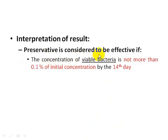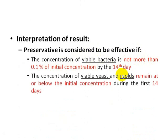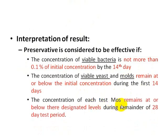A preservative is considered effective if the concentration of viable bacteria is not more than 0.1% of the initial concentration by 14 days. For viable yeast and molds, the concentration must remain at or below the initial concentration during the first 14 days. The concentration of each test microorganism overall must remain at or below its designated level during the remainder of the 28-day test period. If these criteria are met, the pharmaceutical product containing the preservative is considered effective and passes the challenge test.